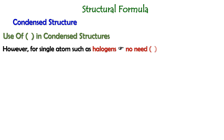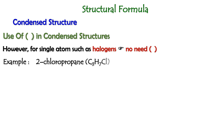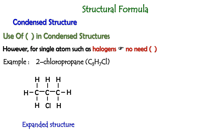If we have a molecule with single atoms such as halogens, we do not need to use the bracket symbol. For example, if we have 2-chloropropane with formula C3H7Cl, this would be the expanded structure. If we convert it into the condensed structure, the structure would be like this or like this.